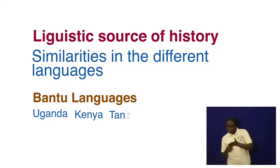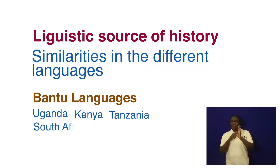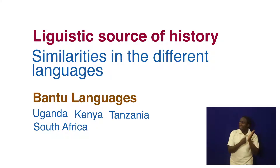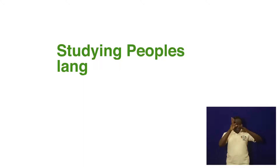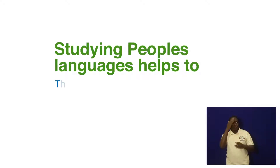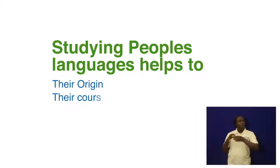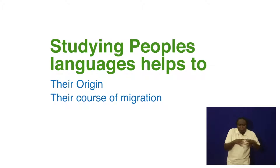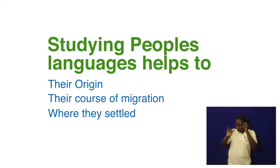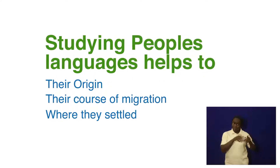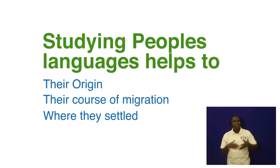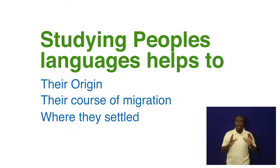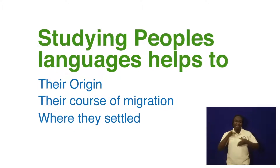For example, if you look at the languages, you can find out that there are similarities. In Uganda, for example, in Kenya, you find similar words. Even when you go outside East Africa — for example, if you go to South Africa — you hear similar words. So when we study the languages of the people, we can know their origin, the course of migration, and where they settled. In studying languages, we can know very many things about the community. That is one source — linguistic.